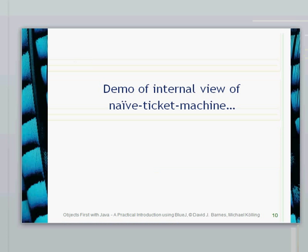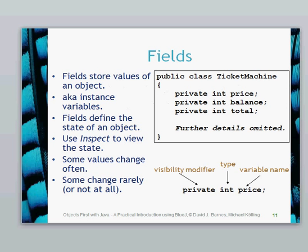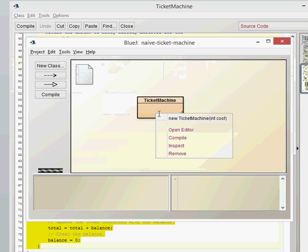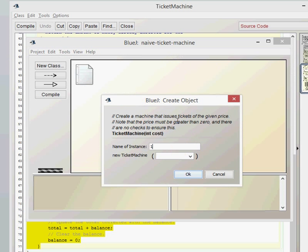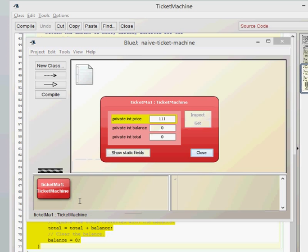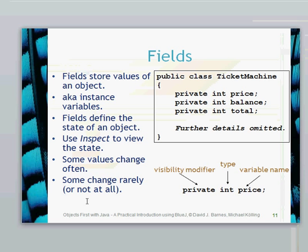Let's go back to the presentation and consider the fields in a little more detail. The field stores the values of the object and ultimately make up the state. Another word to describe the field are the instance variables. The instance variables are variables for the specific instance of an object which has been created. As you've seen previously, you can use the inspect to view the state. We create a new ticket, inspect it and look at the state. That shows all our fields of the object. Some values will change often and some will rarely change at all.